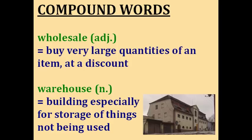Wholesale. Sometimes companies buy very large quantities of items from a manufacturer in order to get a discount — for example, 10,000 pairs of shoes at a reduced price. This is called buying wholesale because they're going to sell those shoes for a profit. If they buy so many items, they need to store them somewhere, and the items can be stored in a warehouse — a building used especially for storage of things not currently in use.